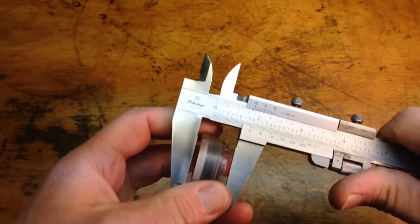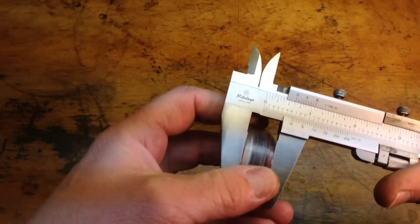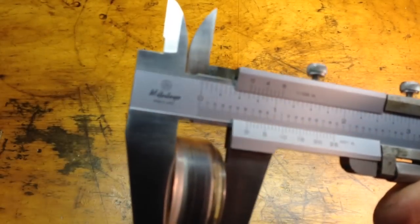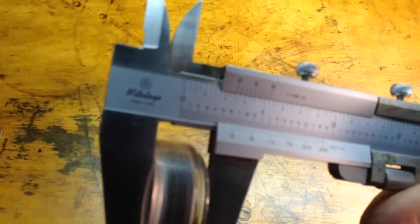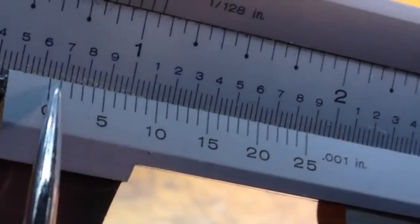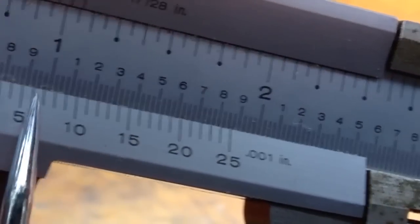Now we're going to do a width measurement on this bearing here, and you can see that the zero is just past the .25, so we have to look for a hash mark here that is lined up.